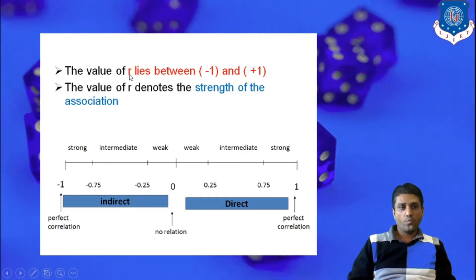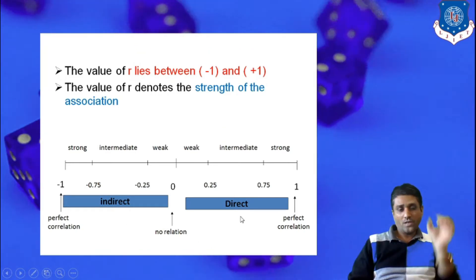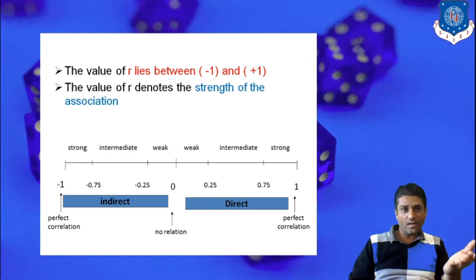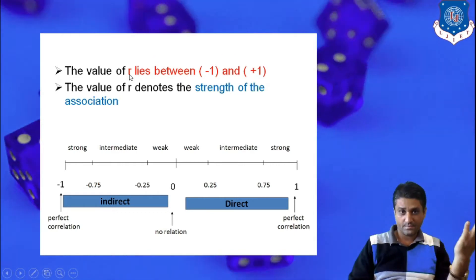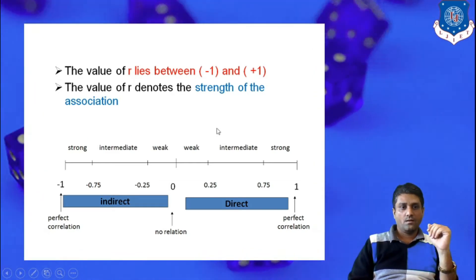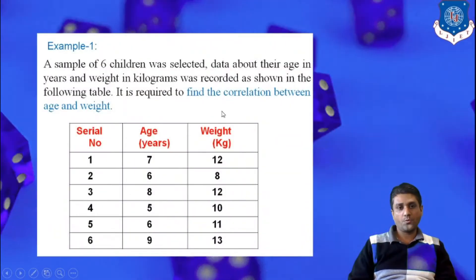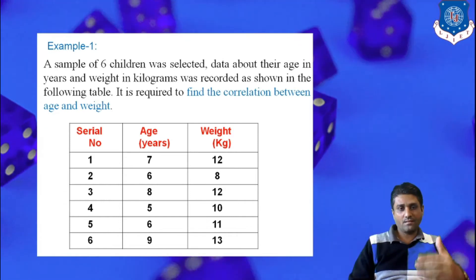The next step is to calculate the value of r. Once we get the value of r, we can interpret our results. But the question that still arises is: how can we calculate the value of r? Let's see how we can obtain the value of the correlation coefficient r. Simultaneously, we will look at an example to see how we can obtain the value of r.